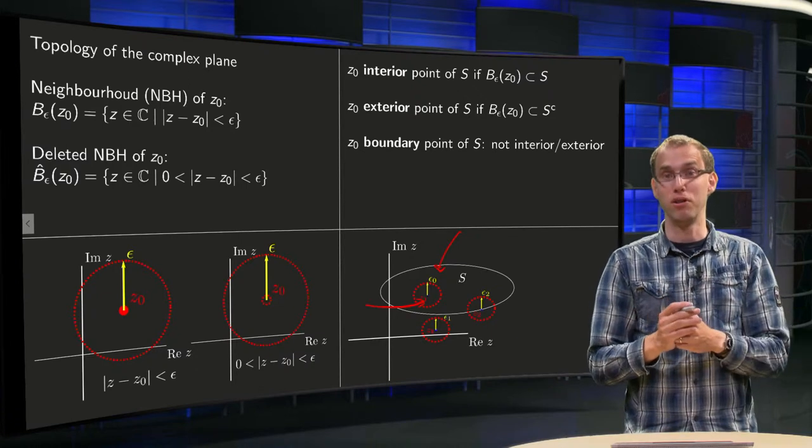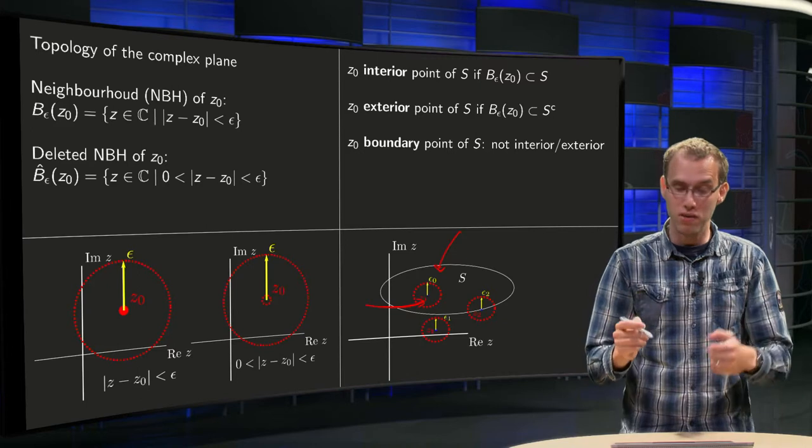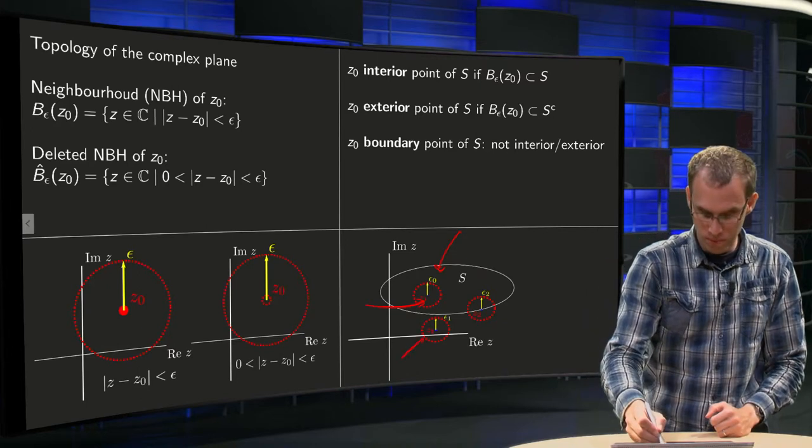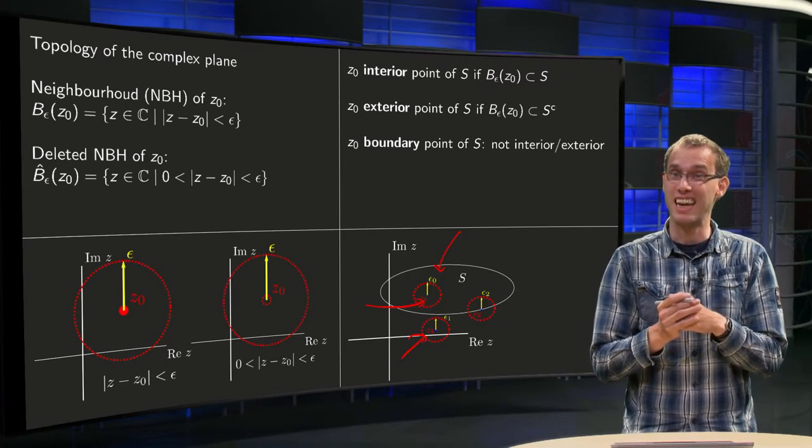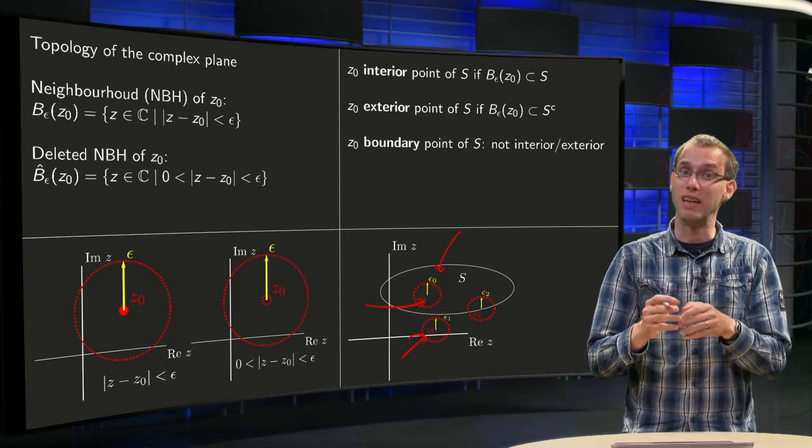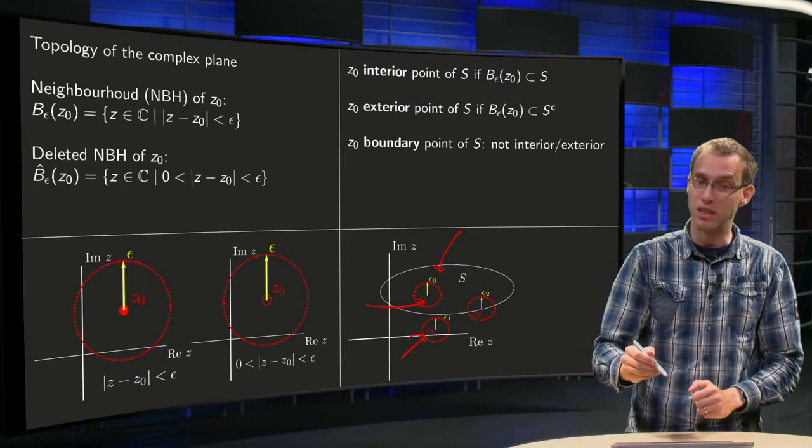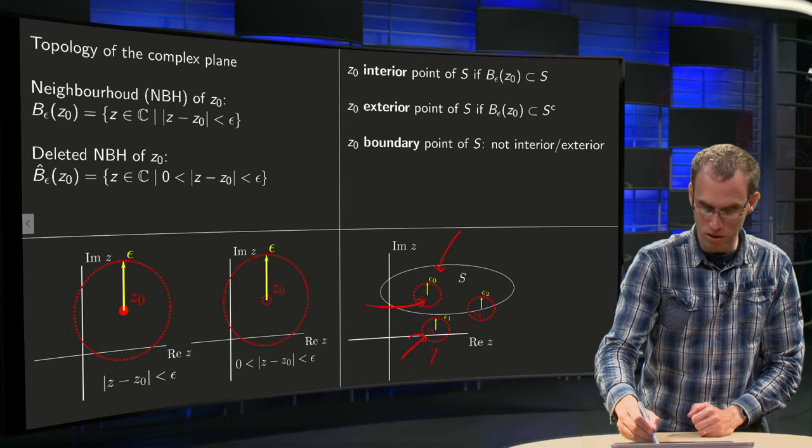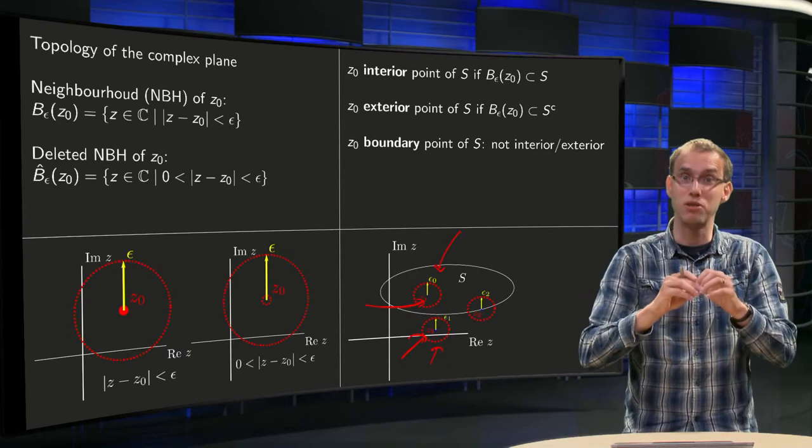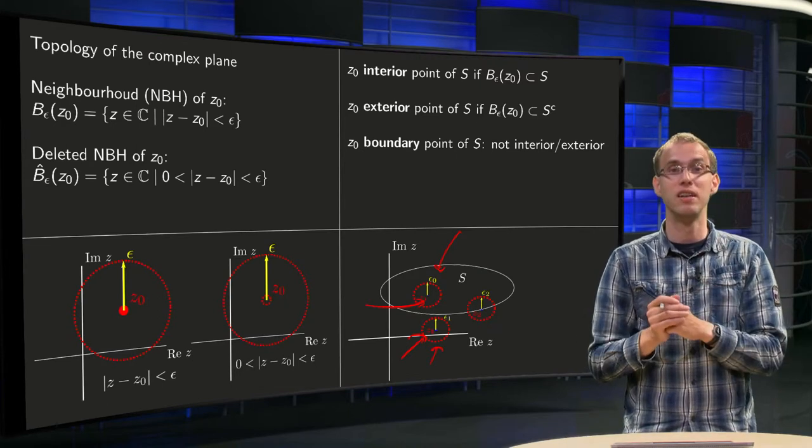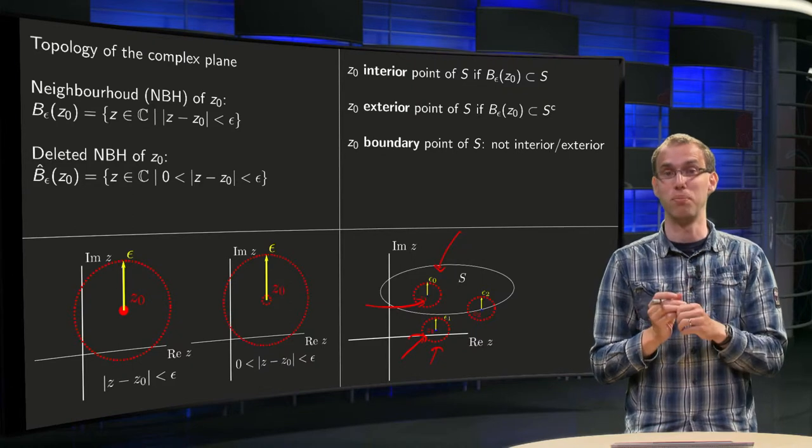z₀ is an exterior point of S if it is outside of S, and that is how it is defined. Here we have z₁. This point is clearly outside of S. Why is it an exterior point? Well, if you can find a neighborhood which is entirely outside of S - in this case you can find such a neighborhood over here - you can make a small disk around z₁ which is entirely outside of S, and that means that z₁ is an exterior point of S.